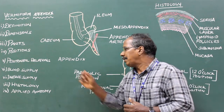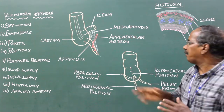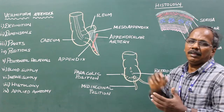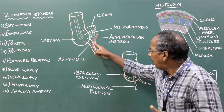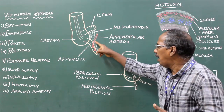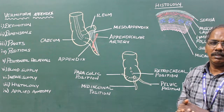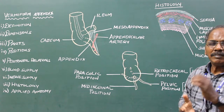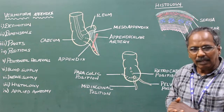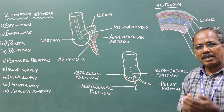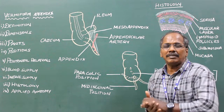Blood Supply. The appendix is supplied by the appendicular artery. It is an end artery and is a branch of the ileocolic artery. Venous drainage is by the appendicular vein, which drains into the superior mesenteric vein.